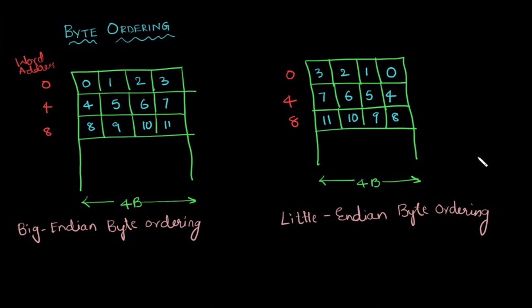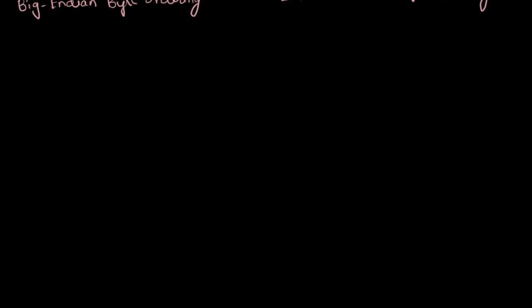Now let us consider an example of both of these ordering schemes. So, let us have an example memory. This is of big endian scheme, big endian. We have a word of 4 bytes, 1, 2, 3 and 4.